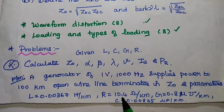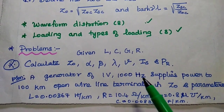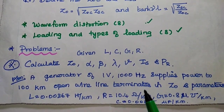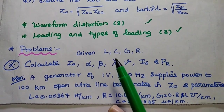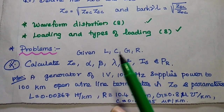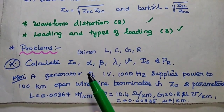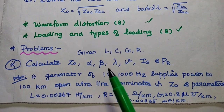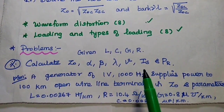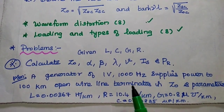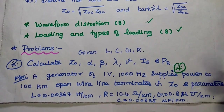Definitely there may be one problem in the university examination, and we can expect this question because it is repeatedly coming in many question papers. Here they have given us the primary constants LCGR — that is inductance, capacitance, conductance, and resistance — and we have to calculate the characteristics impedance, attenuation constant, phase shift constant, wavelength, phase velocity, sending end current, and received power. This question is very important and repeatedly asked.